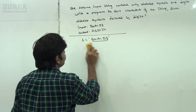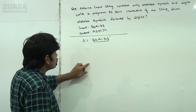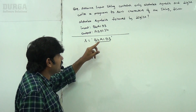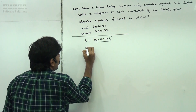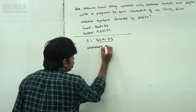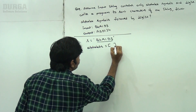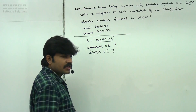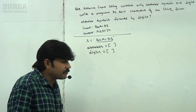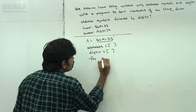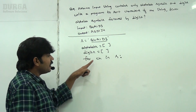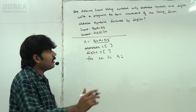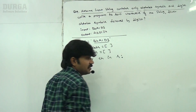How can you solve this problem? Very simple. First, separate the alphabet symbols and the digits from the string. I am taking two empty lists: alphabets = [] and digits = []. Then, for each character in S, since the input string contains only alphabet symbols and digits, each character is either an alphabet symbol or a digit.